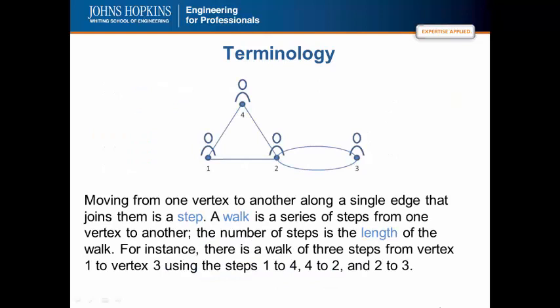Moving from one vertex to another along a single edge that joins them is a step. So moving from node one to two is a step, two to four is another step, four to one is another step, one back to two is another step. A walk is a series of steps from one vertex to another. The number of steps is the length of the walk.